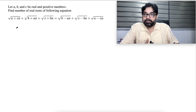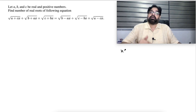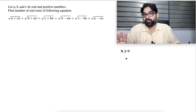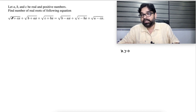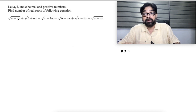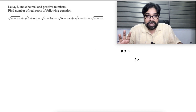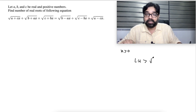Suppose I do not know whether x is positive or negative — I will take two cases. Suppose x is greater than 0. So think carefully: this quantity is bigger than √A, this quantity is bigger than √B because A, B are positive numbers and x is also positive. This is bigger than √C. So the left-hand side quantity is bigger than √A + √B + √C.